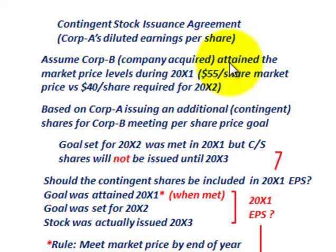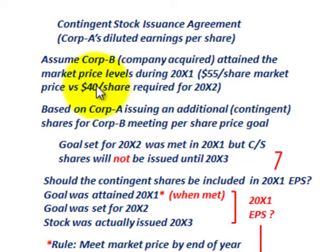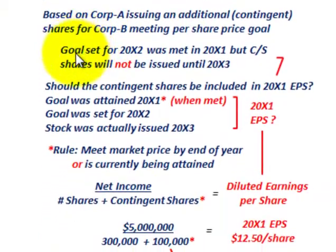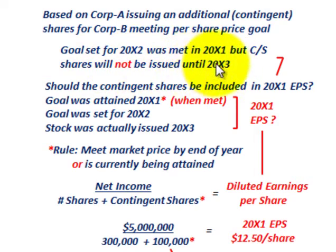Corporation B, the company acquired, attained the market price level in 20x1 — that was $55 per share versus the $40 per share required for year 20x2. They had to attain that $40 price level in year 20x2, but it was actually attained one year earlier in 20x1 at $55 per share. So the goal was set for 20x2, but it was met in year 20x1, while the common stock shares will not actually be issued until year 20x3 to the shareholders of Corporation B.